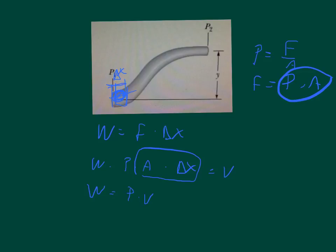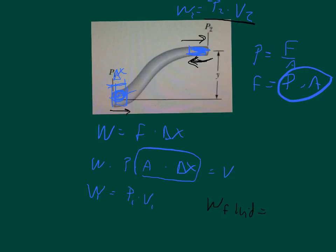Because the fluid cannot be compressed — we're talking about an ideal fluid — an exact same amount of fluid has to exit the other end. So the initial work is pressure one times volume one, and the final work is pressure two times volume two. The pressure at the outlet is in the opposite direction of the work, so it carries a negative sign. The total work of the fluid equals pressure one times volume minus pressure two times volume.